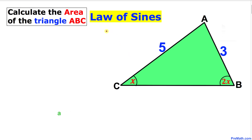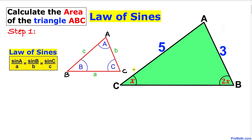We'll use the Law of Sines to solve this triangle. As a quick review: for triangle ABC with angles A, B, and C and their opposite side lengths a, b, and c respectively, the Law of Sines states that sine of angle A divided by side a equals sine of angle B divided by side b equals sine of angle C divided by side c.